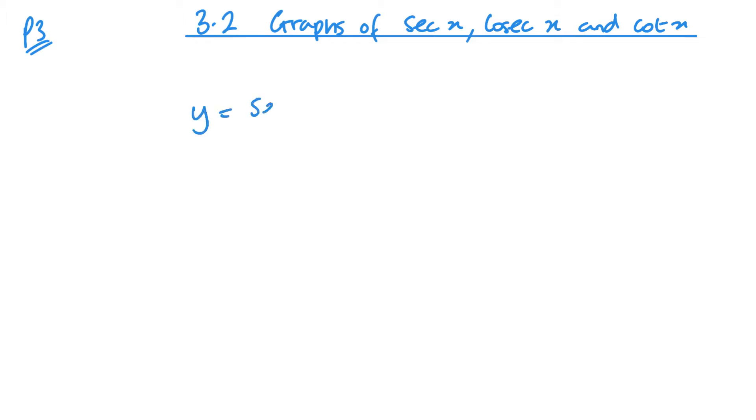Just as a reminder, sec x is 1 over cos x, cosec x is 1 over sin x, and cot x is 1 over tan x. Now to draw these graphs, you don't really need to necessarily learn the new ones. You just have to understand what's happening to the original graphs and that will enable you to draw the new ones.